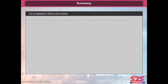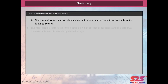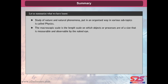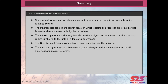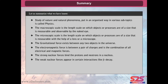Let us summarize what we have learned. Study of nature and natural phenomena put in an organized way in various subtopics is called physics. The macroscopic scale is the length scale on which objects or processes are measurable and observable by the naked eye. The microscopic scale is measurable with the help of a lens or a microscope. The gravitational force exists between any two objects in the universe. The electromagnetic force is between a pair of charges and is the combination of all electrical and magnetic forces. The strong nuclear forces bind the protons and neutrons in a nucleus. The weak nuclear forces appear in certain interactions like beta decay. Some physical quantities that remain constant in time are the conserved quantities of nature.